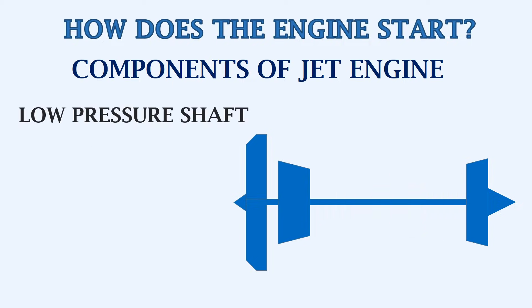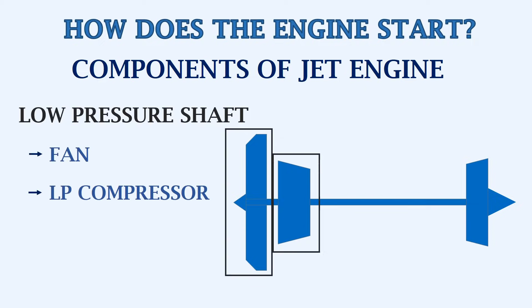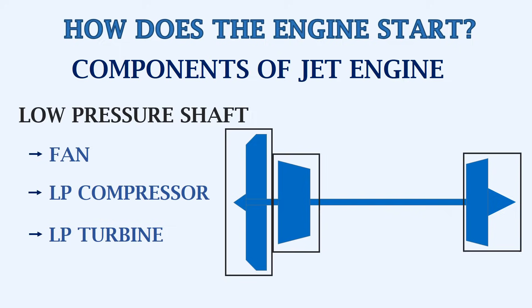This is the low pressure shaft. It consists of the fan, the low pressure compressor, and the low pressure turbine. This shaft is also called the N1 shaft, or LP shaft.